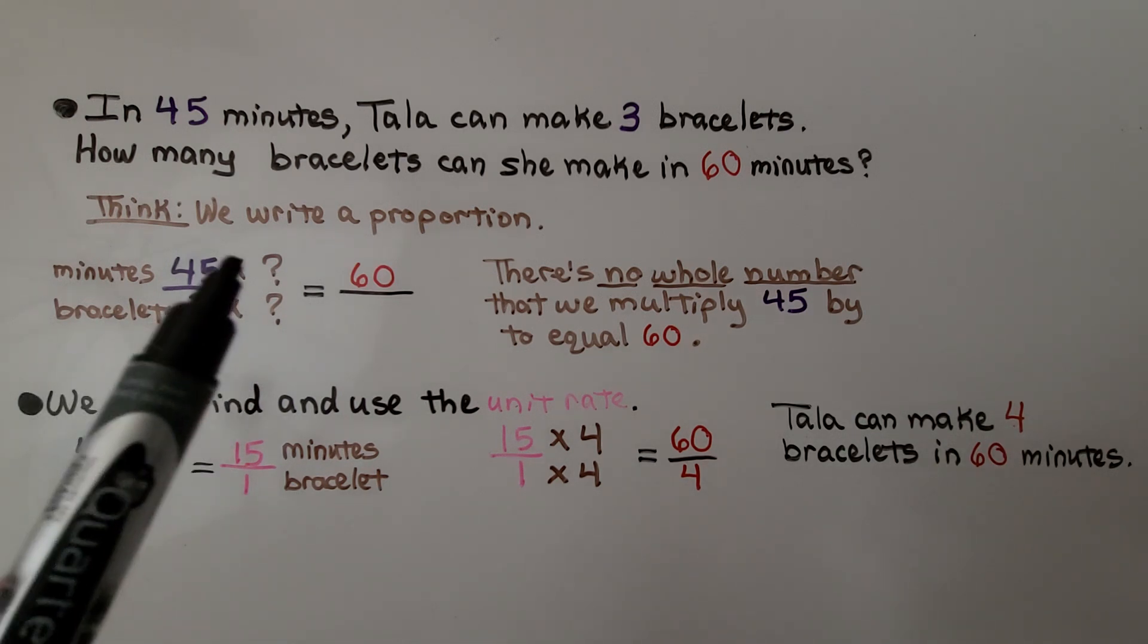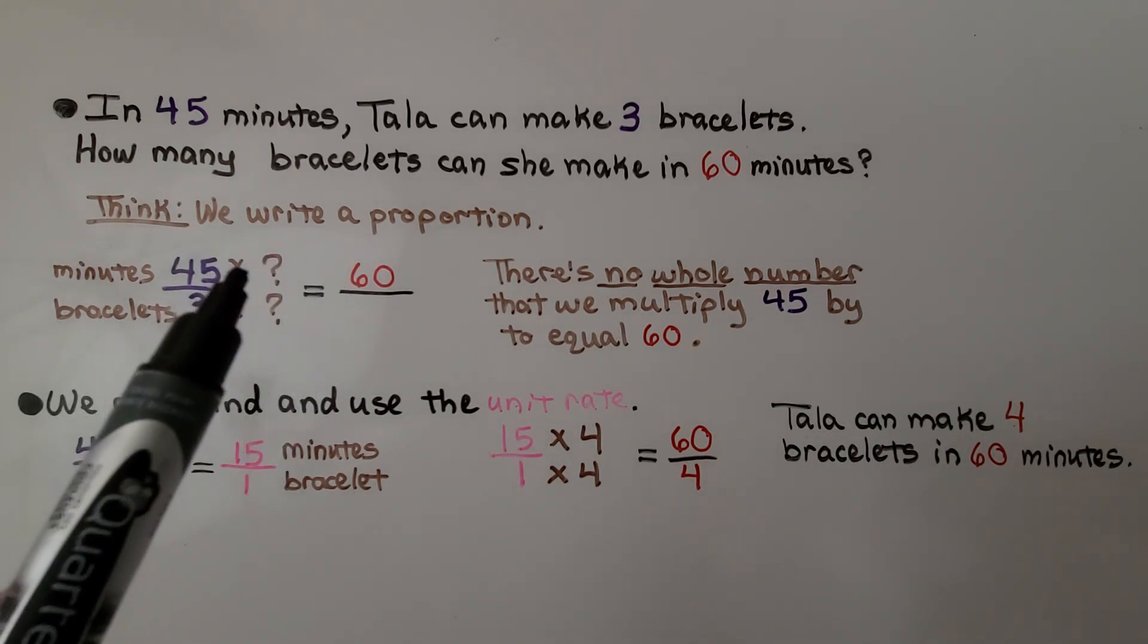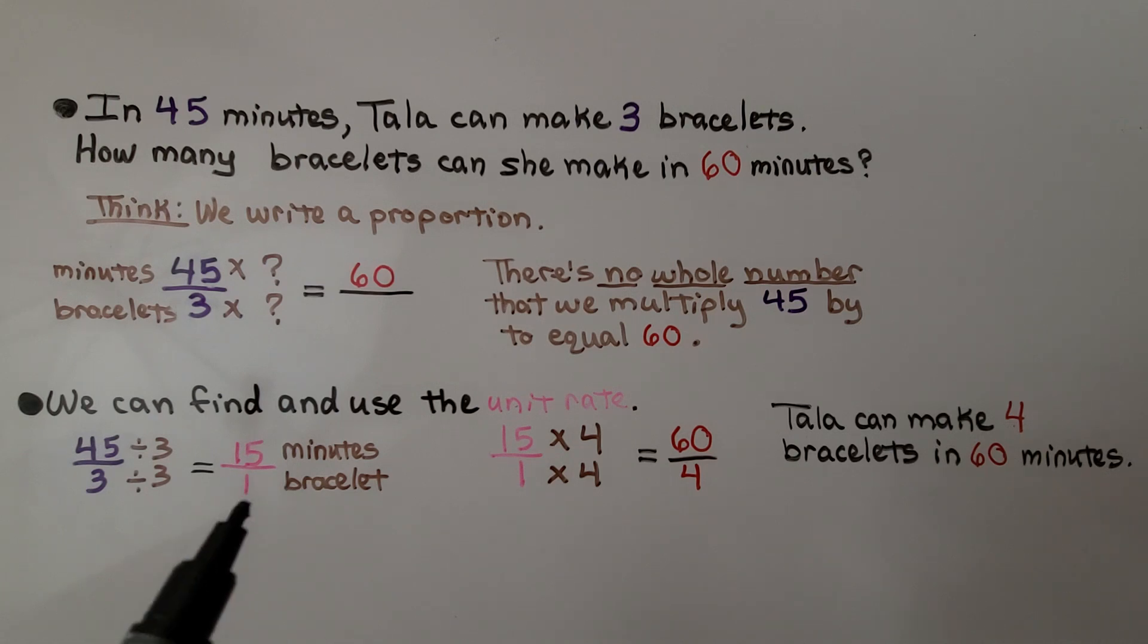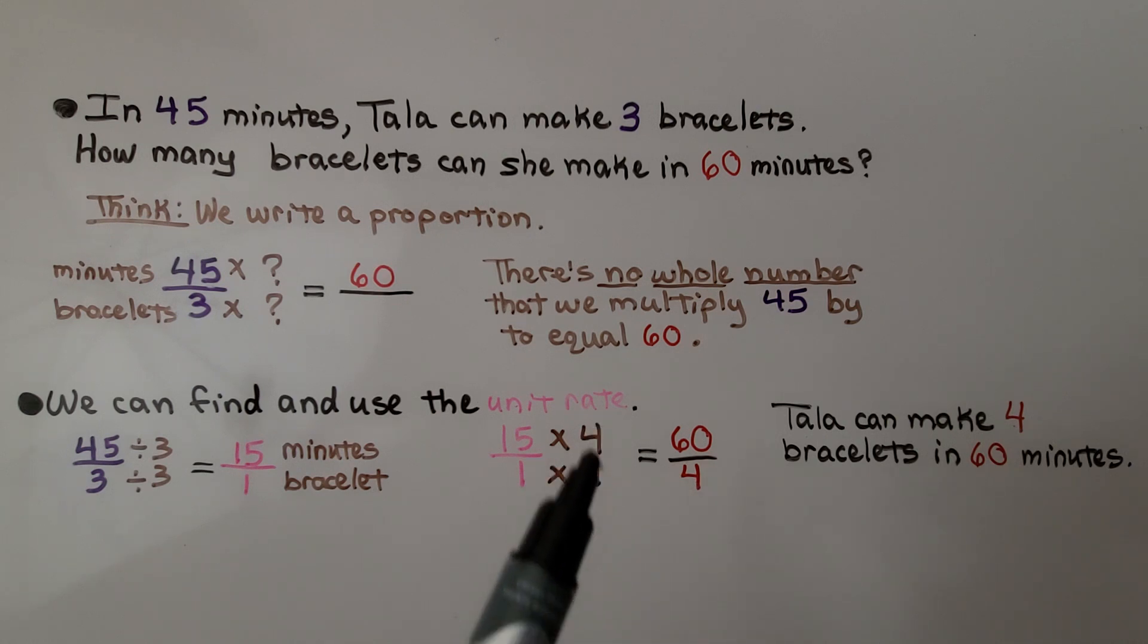We couldn't answer it the regular way by thinking of what we can multiply by, so we had to use a unit rate, then multiply that to match the 60, and then figure out if we multiply this denominator by the same thing for the unit rate, that we would get a 4.